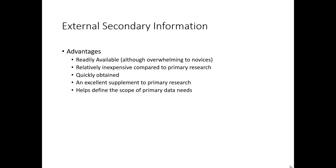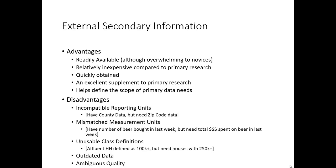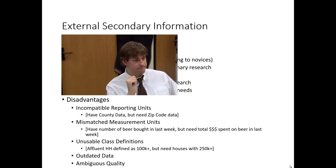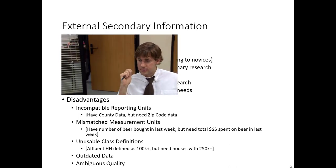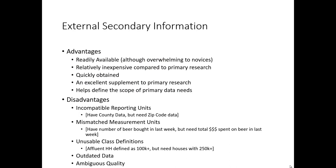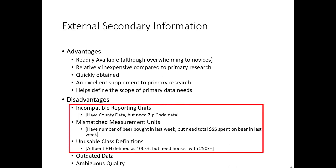There are also numerous disadvantages of external secondary information. Perhaps the most overwhelming feeling is the sense that you've almost found exactly what you needed. Instead of finding the precise piece of information that perfectly answers your research question, you find something very near it, and then you have to make a judgment call about whether it's sufficiently adequate. These disadvantages represent that 'almost there but not quite' feeling.